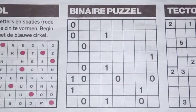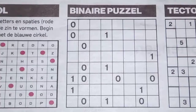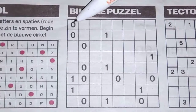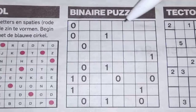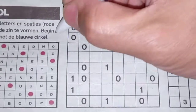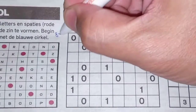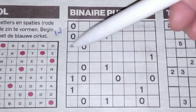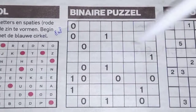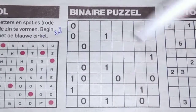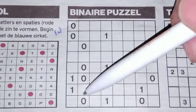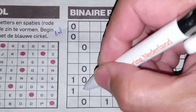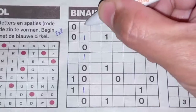The fifth puzzle is a binary puzzle. Let me count — it's an 8 by 8 binary puzzle. That means in a row or in a column there are always 4 zeros and 4 ones.